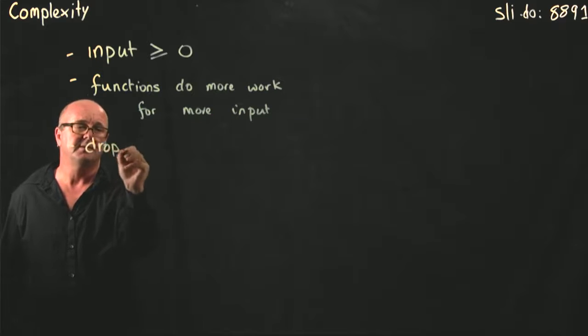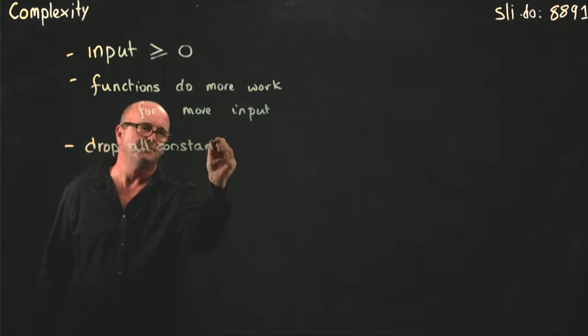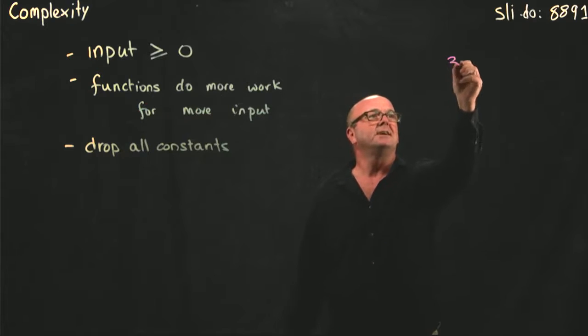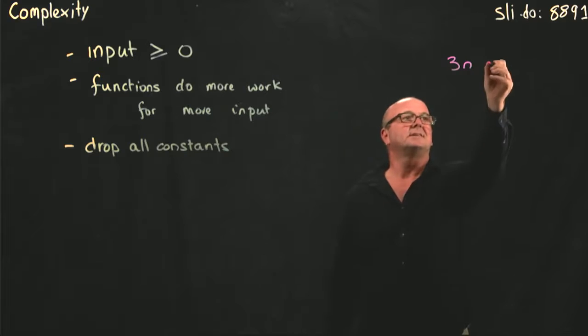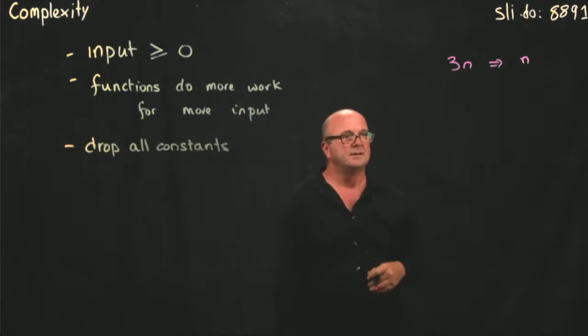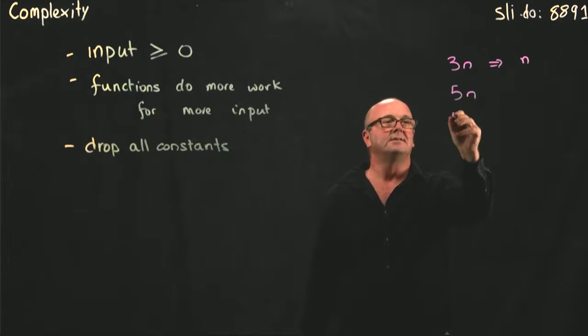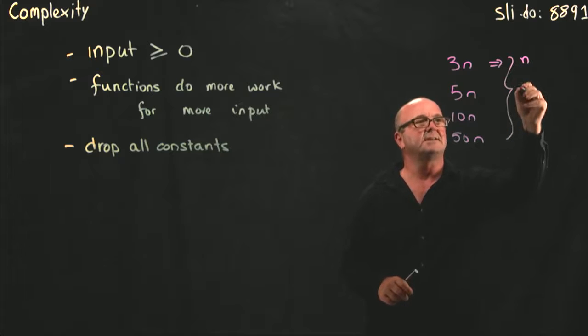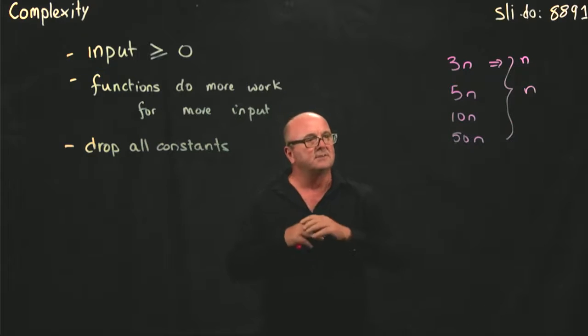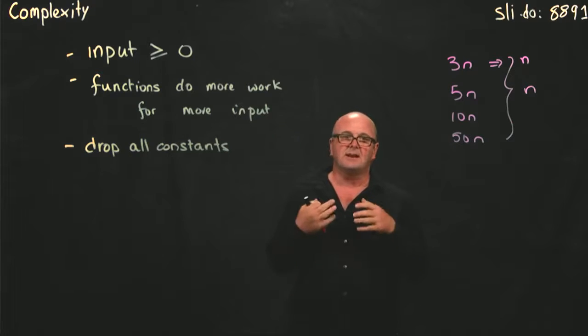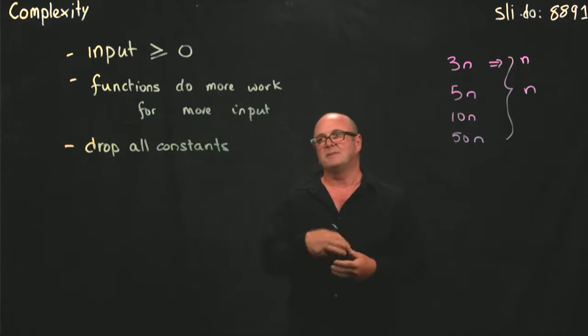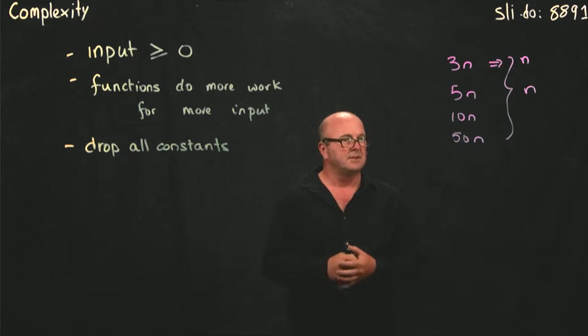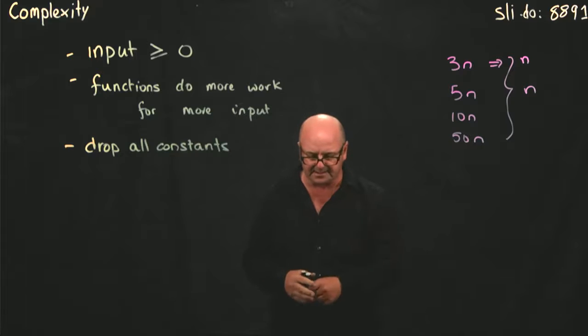We're going to drop all constants. If we have an algorithm that is 3n, we say that algorithm is the same as an algorithm that is n. The 3 doesn't matter. It can be 5n, 10n, 50n, or more, and all of those have the same complexity, which is complexity of n. If we're considering an algorithm that's 5n compared to n squared, it doesn't matter if it's 5n, 50n, 500n. The n squared algorithm is always going to be a lot worse. So we ignore the constants.